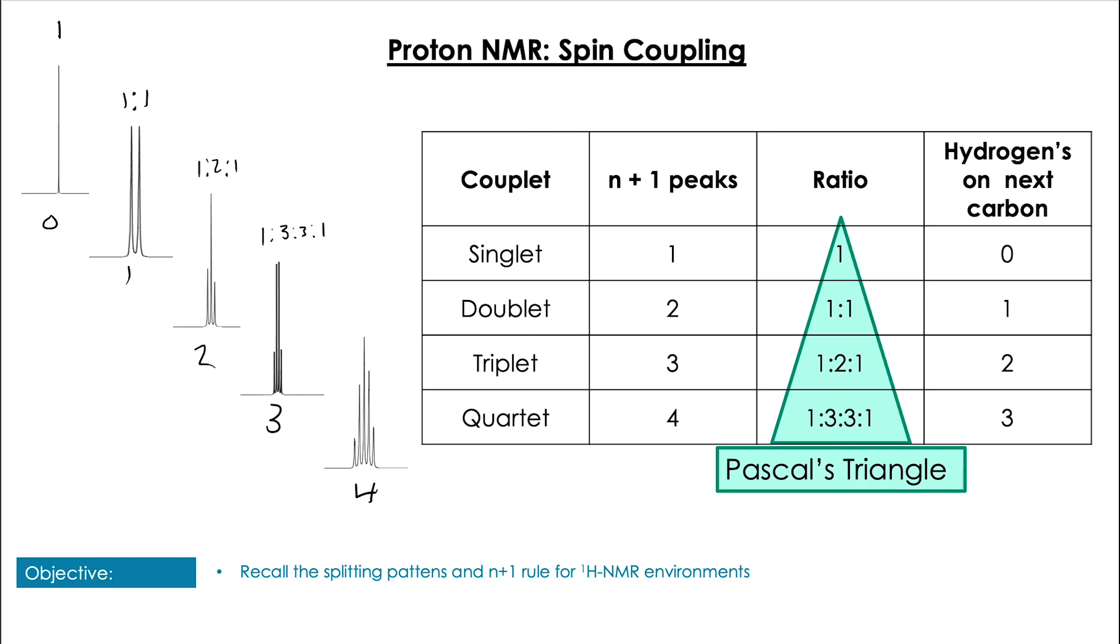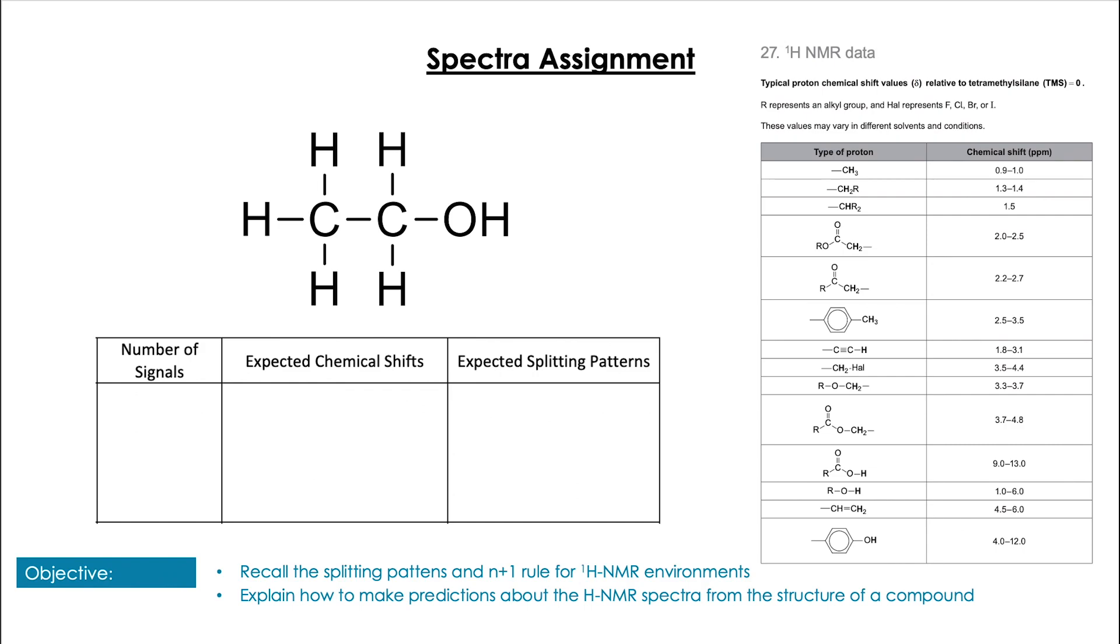The singlet being for next to zero hydrogens, and all the way down to the quintet representing being near four other hydrogens. For IB knowledge, down to the quartet will suffice. So before we put this all together for use in structure determination, we can actually work in reverse and think about from a molecule what kind of signals would we expect to see. We can look at the number of signals, the expected shift we might see, and the expected splitting patterns. And we can use table 27 of our data booklet to do this. Doing this process makes using the spectra to find our molecules a lot easier.